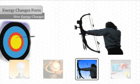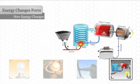In addition, some of the energy changes to sound energy as the bowstring twangs. When we make electricity, energy changes form repeatedly.